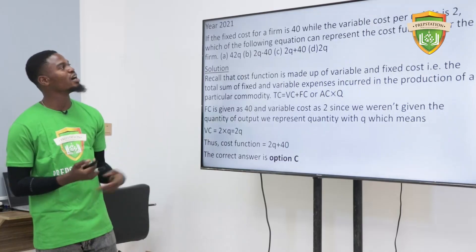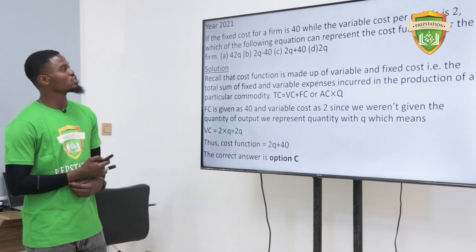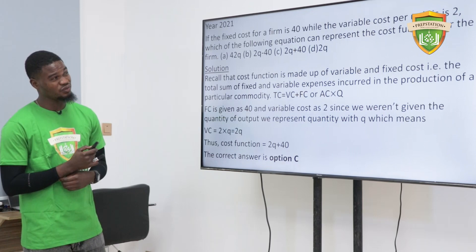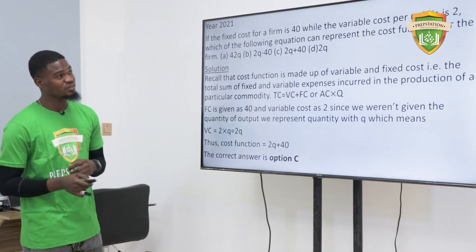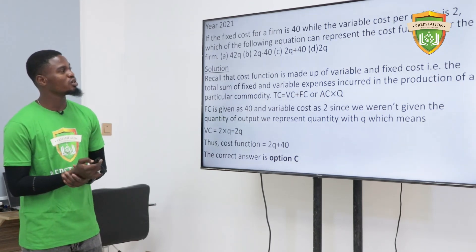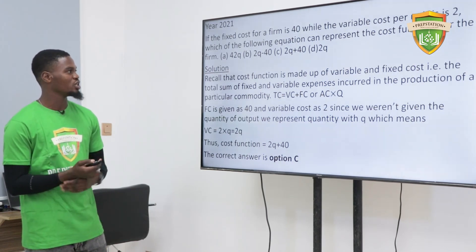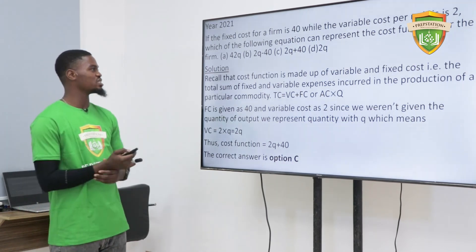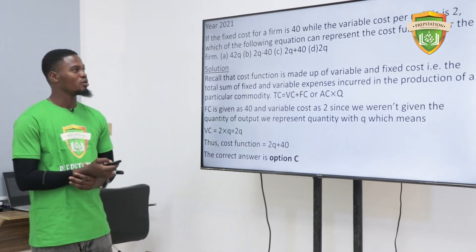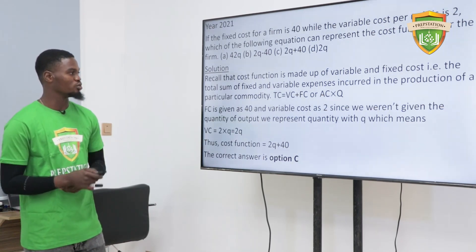Here is a 2021 question. If the fixed cost for a firm is 40, while the variable cost per unit is 2, which of the following equations can represent the cost function for the firm? The options are: A) 42k, B) 2k minus 40, C) 2k plus 40, D) 2k.